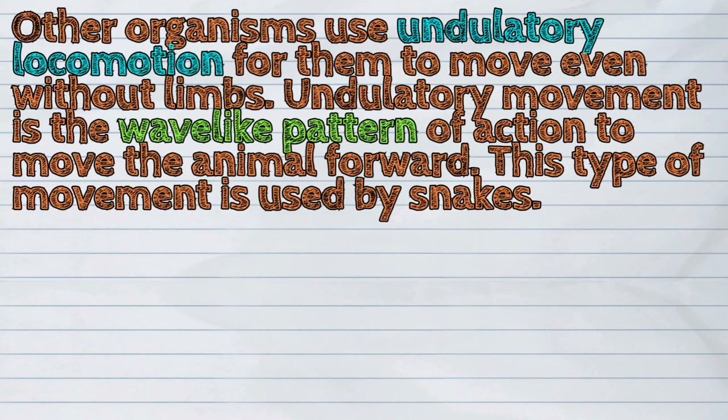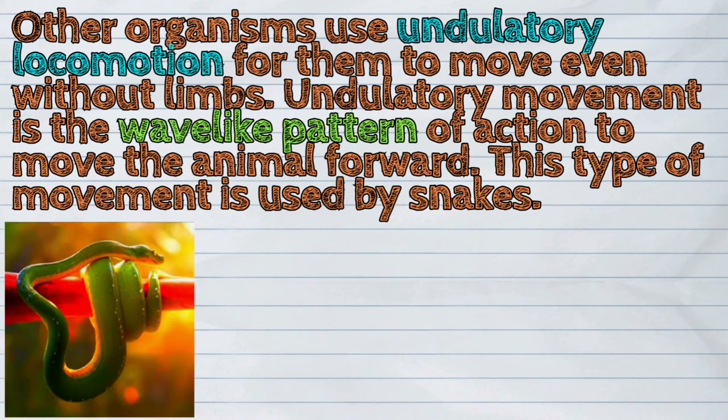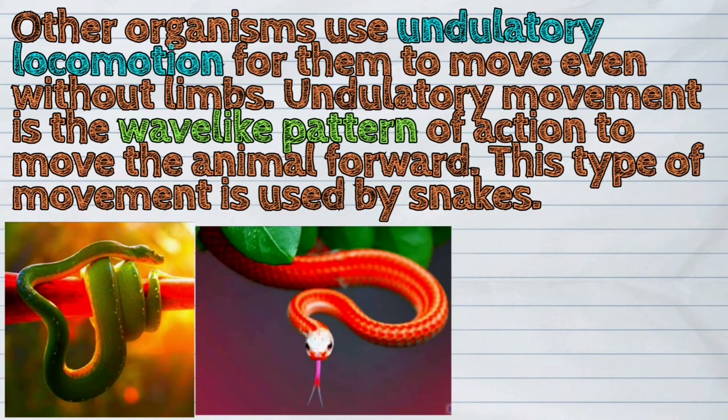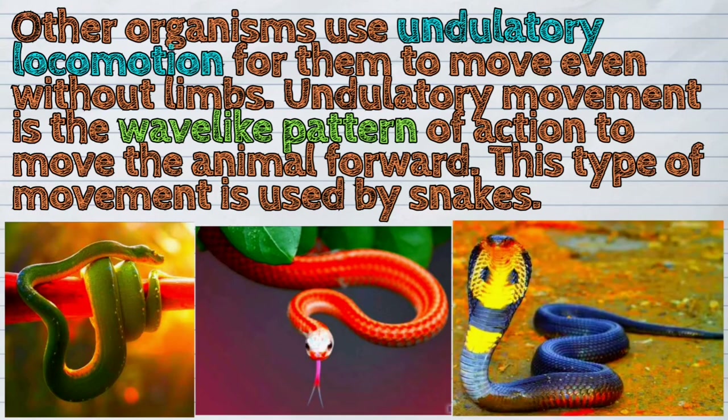Other organisms use undulatory locomotion to move even without limbs. Undulatory movement is the wave-like pattern of action to move the animal forward. This type of movement is used by snakes.